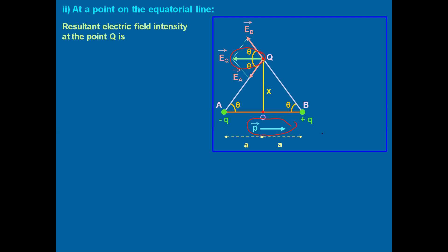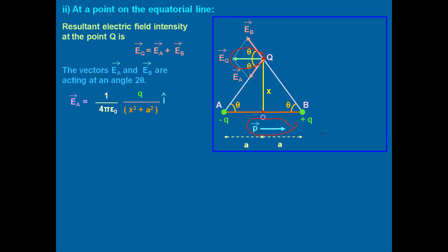To find the resultant electric field intensity at point Q, let us find the values of Ea and Eb. The value of Ea = (1/4πε₀) · q / AQ². Looking at the triangle, AQ is the hypotenuse, so using Pythagoras theorem: AQ² = x² + a². Similarly, Eb = (1/4πε₀) · q / (x² + a²), because BQ is also the hypotenuse, giving BQ² = x² + a². So we have the magnitudes of the individual vectors Ea and Eb.